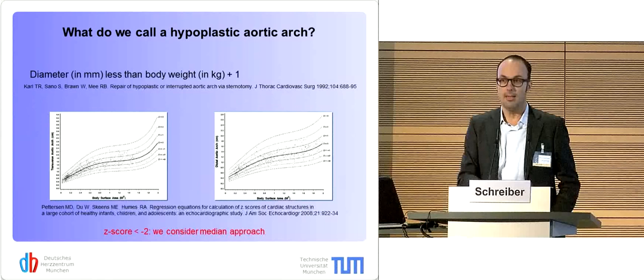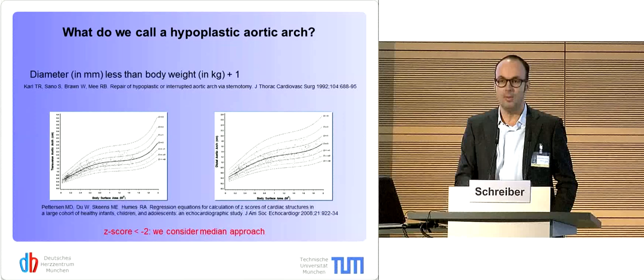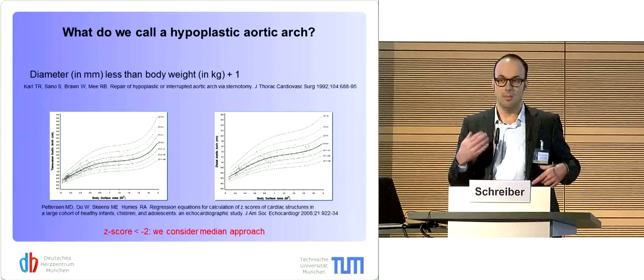What is also being used — as you see in the lower panel of this publication — is an echocardiographic study suggesting that a Z-score of minus two should lead us to be more aggressive in the operating room: either an extended anastomosis or treating the patient from the front.